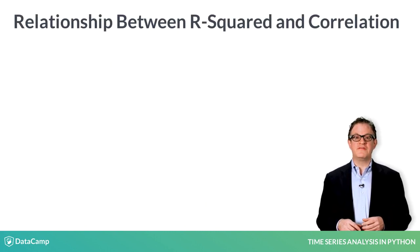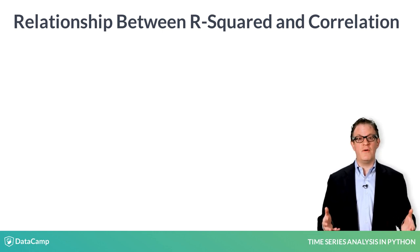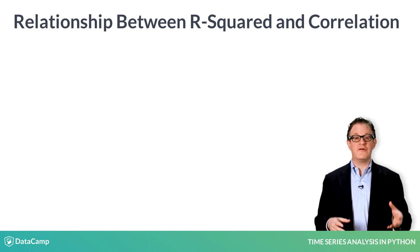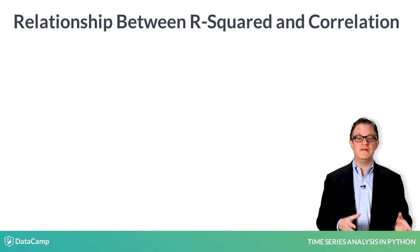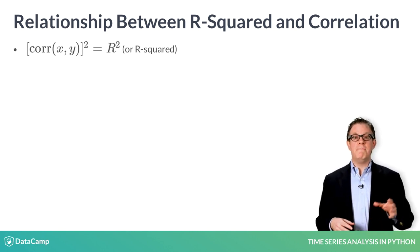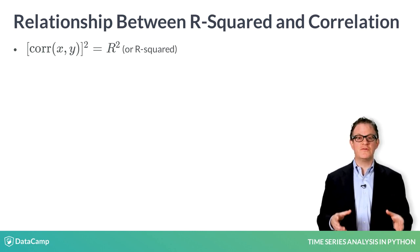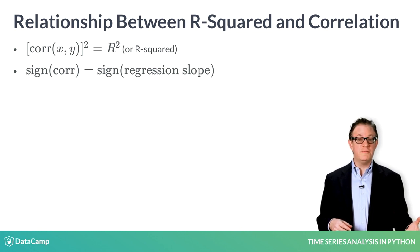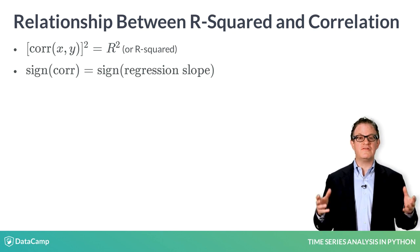From the scatter diagrams, you saw that the correlation measures how closely the data are clustered along a line. The R-squared also measures how well the linear regression line fits the data. So, as you would expect, there is a relationship between correlation and R-squared. The magnitude of the correlation is the square root of the R-squared. And the sign of the correlation is the sign of the slope of the regression line. If the regression line is positively sloped, the correlation is positive. And if the regression line is negatively sloped, the correlation is negative.